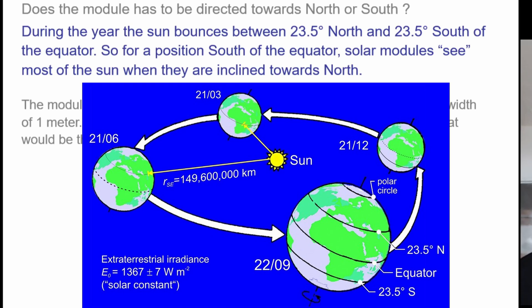And at 23.5 degrees south of the equator, it's on 21st of December. So for position of the sun at the equator, the solar module sees most of the sun when they are inclined towards north.